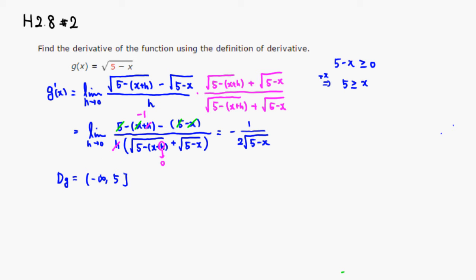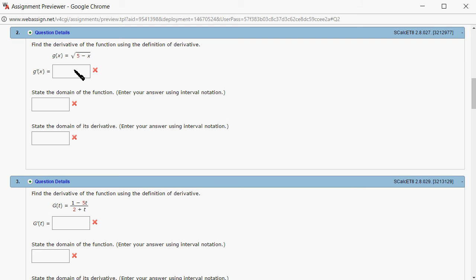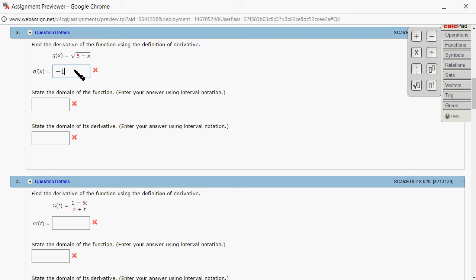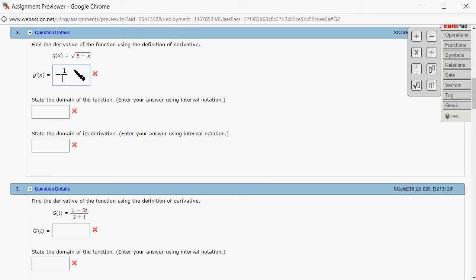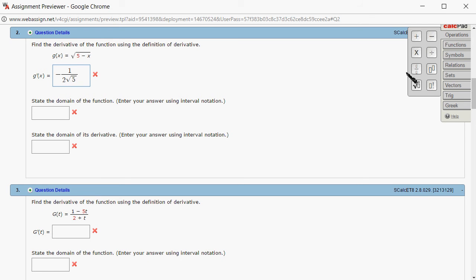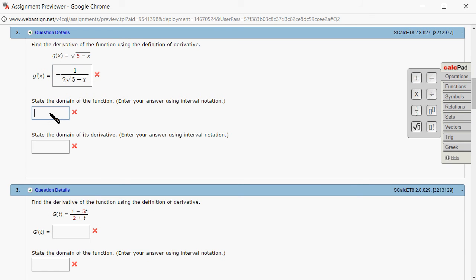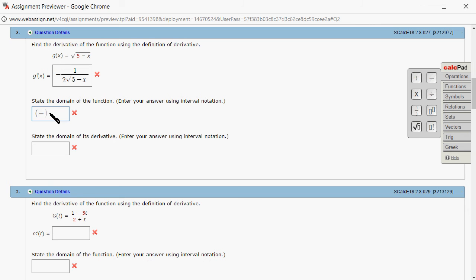So let's type it in. We got negative 1 over 2 times square root of 5 minus x. And here, domain is negative infinity to 5, and the square bracket there.